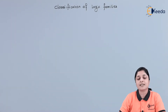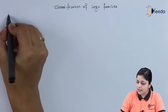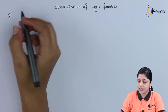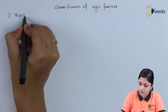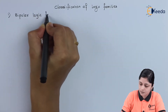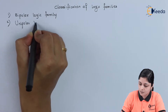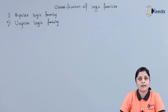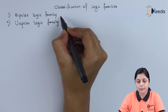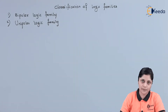We are going to discuss in detail the classification of logic families. Broadly, logic families are divided into two types: first is bipolar logic family, and second is unipolar logic family.